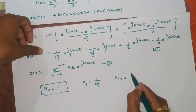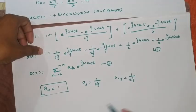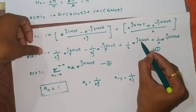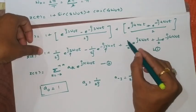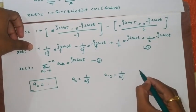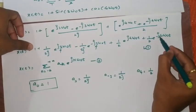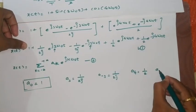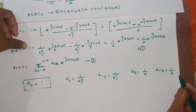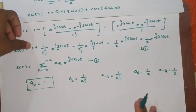Similarly here it is multiplied with 4 so this coefficient will be 4th term as a4 = 1 by 2. This is multiplied with minus 4 so this is a-4 as again 1 by 2 and remaining all terms are going to be 0.